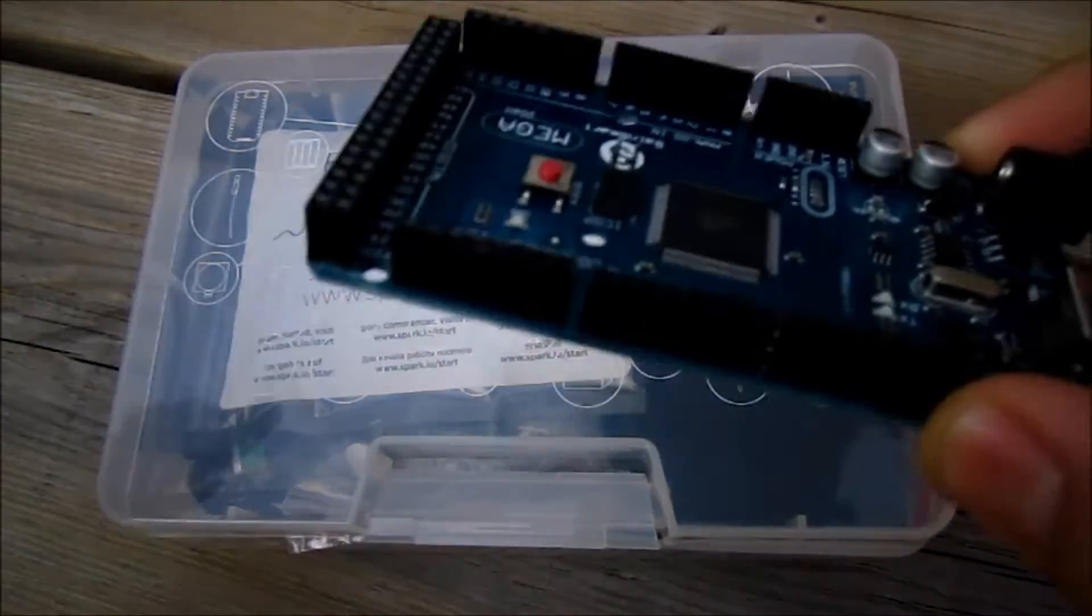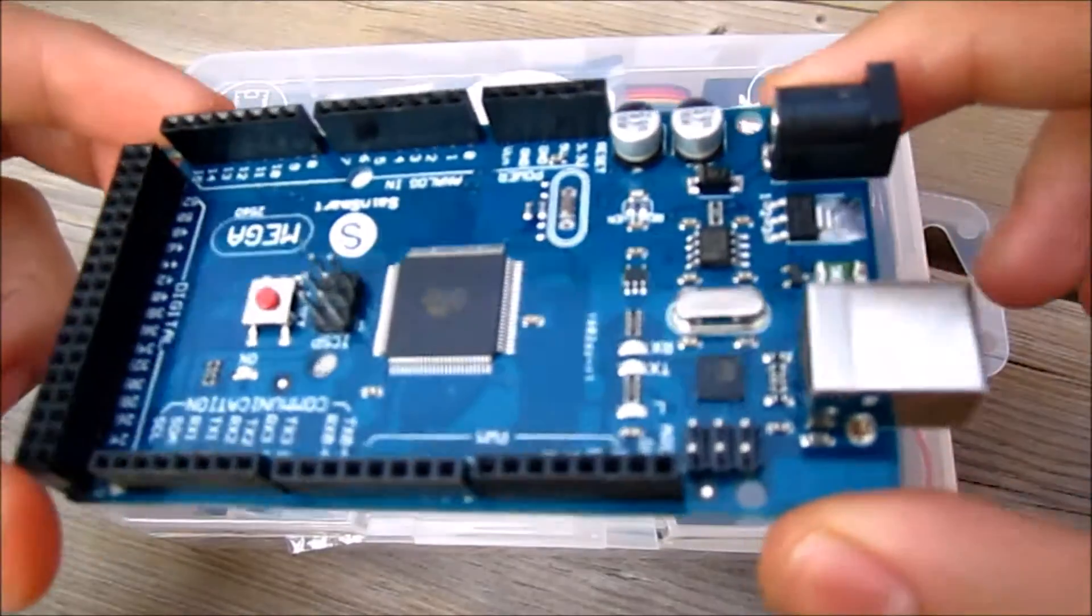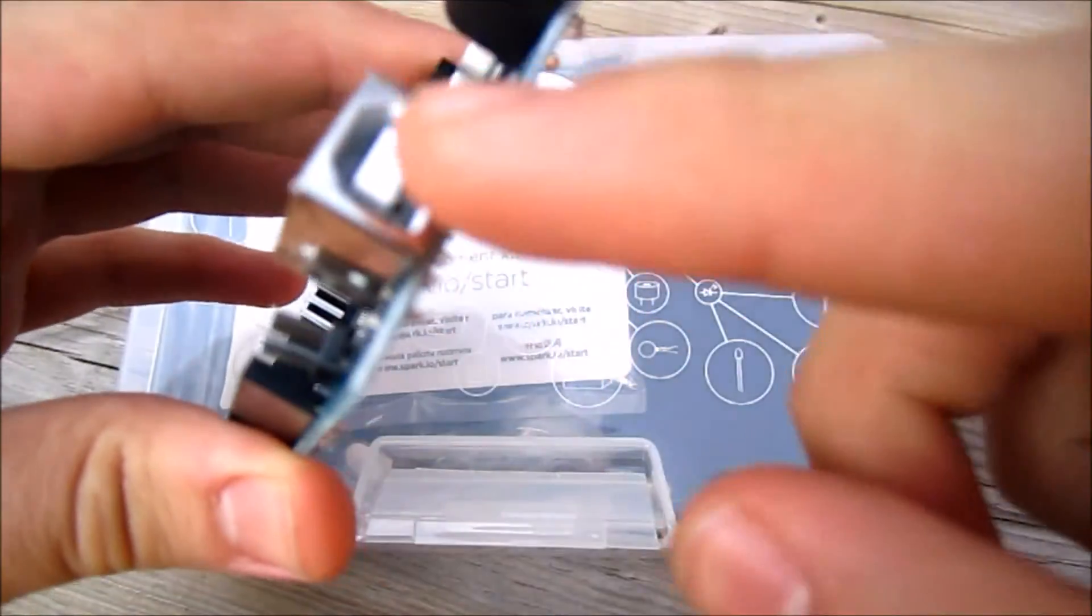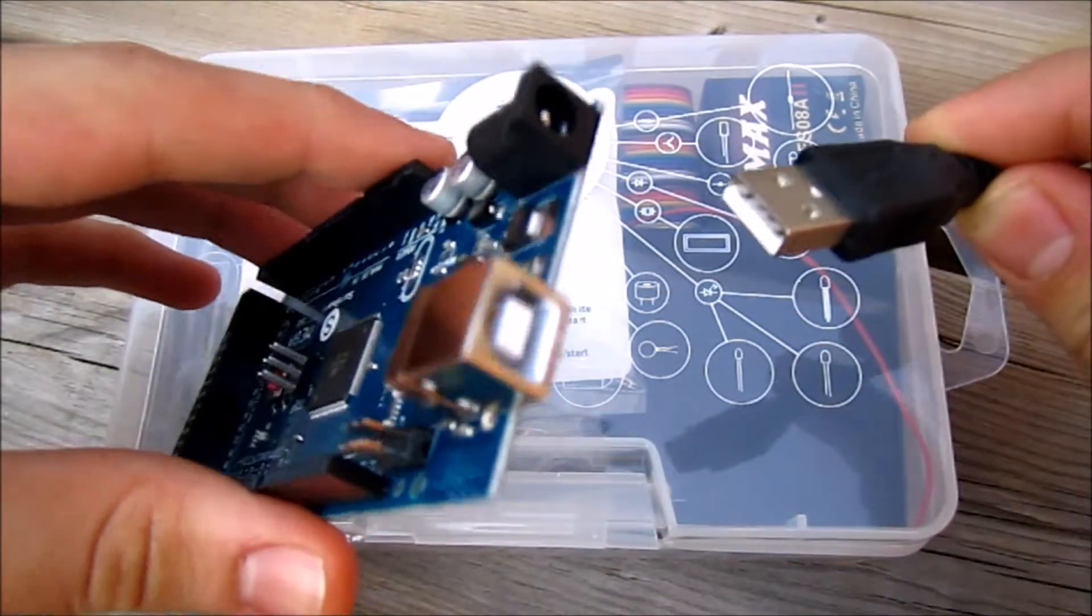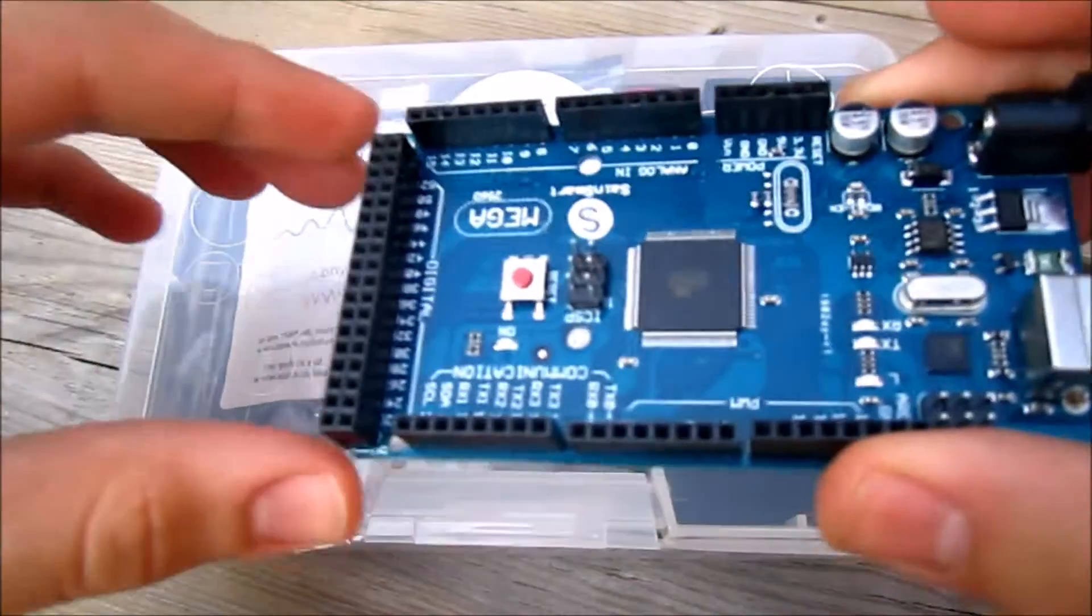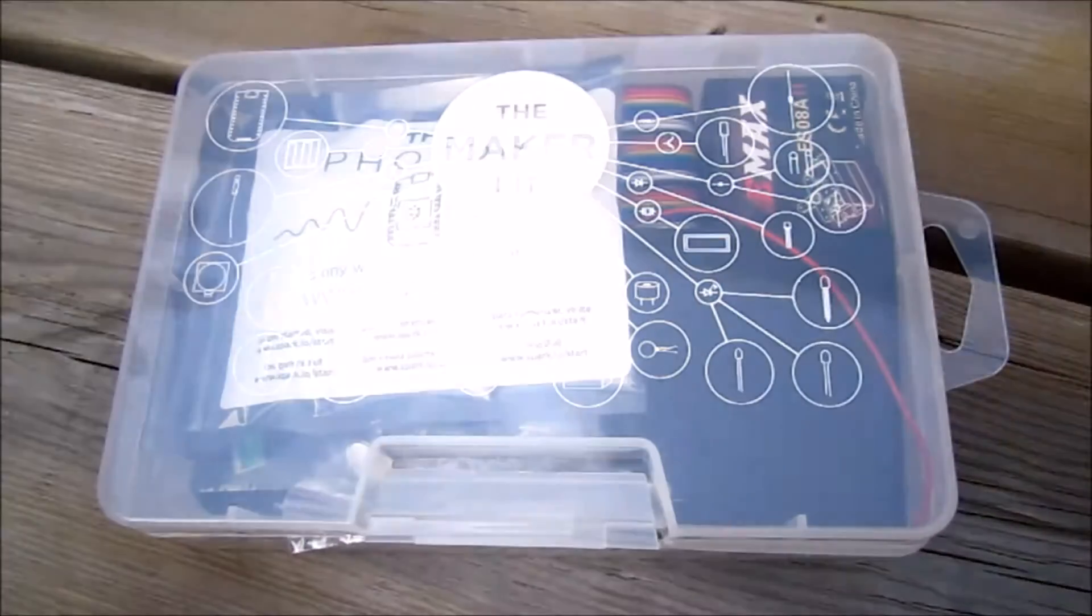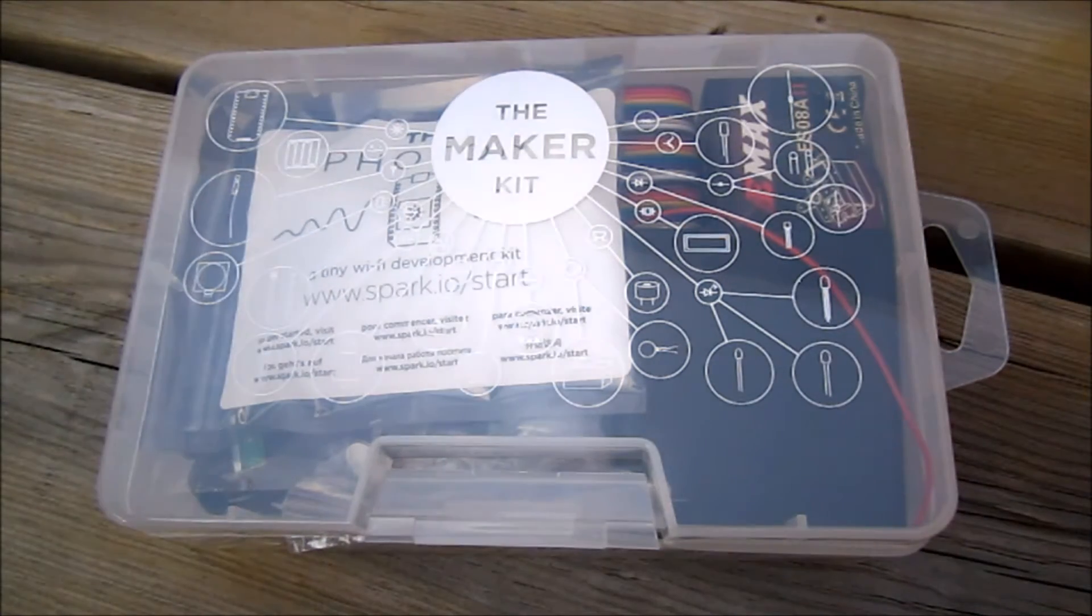You can see this is a regular Arduino board—you would need a USB Type B and connect it to a computer to upload code to the board. The Photon actually uses Wi-Fi to upload the code to the board.